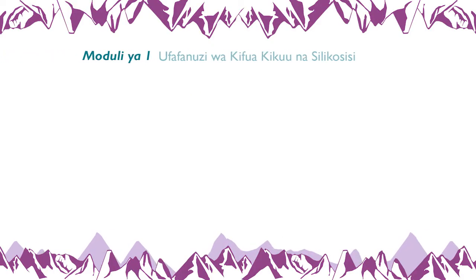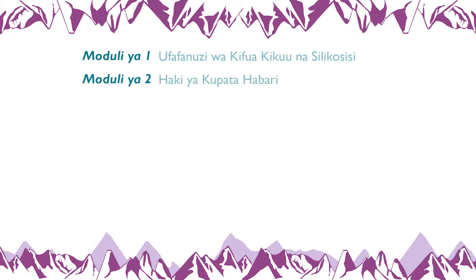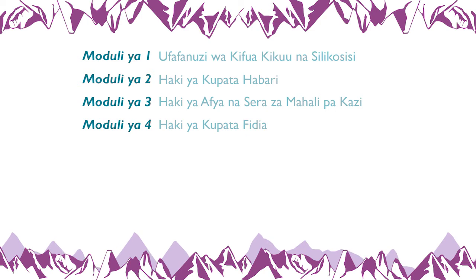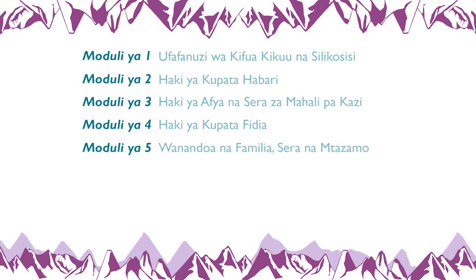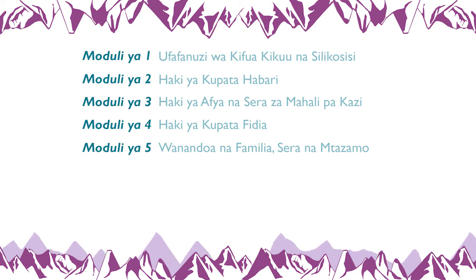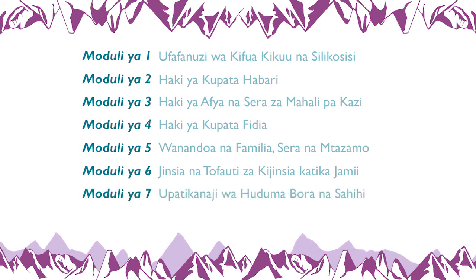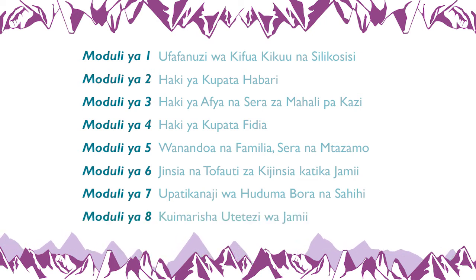Module 1 – Introduction to TB and Silicosis. Module 2 – The Right to Information. Module 3 – The Right to Health and Workplace Policies. Module 4 – The Right to Compensation. Module 5 – Families and Spouses Policies and Perspectives. Module 6 – Gender and Gender Inequality. Module 7 – Appropriate and Quality Service Delivery. Module 8 – Sustaining Community Advocacy.